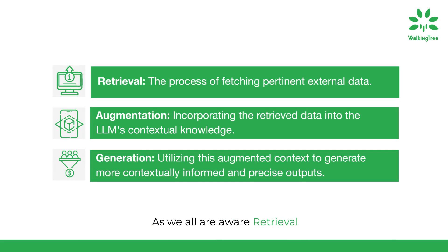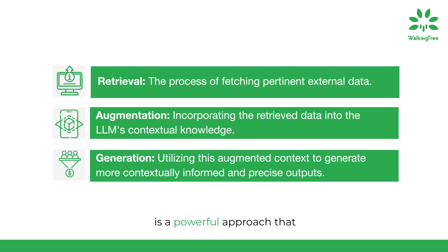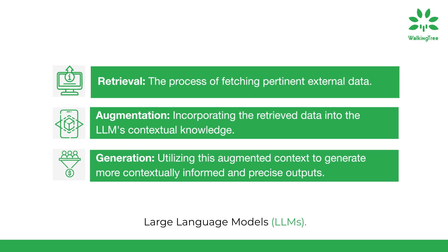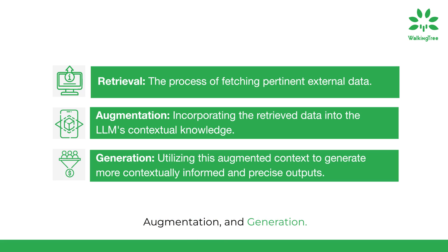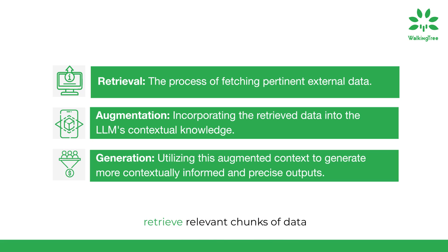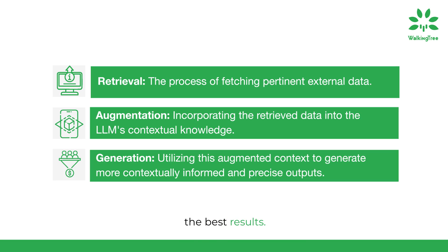As we all are aware, retrieval augmented generation, or RAG, is a powerful approach that enhances the capabilities of large language models, LLMs. It's built on three core components: retrieval, augmentation, and generation. The main goal is to dynamically and efficiently retrieve relevant chunks of data depending on your specific task, ultimately delivering the best results.